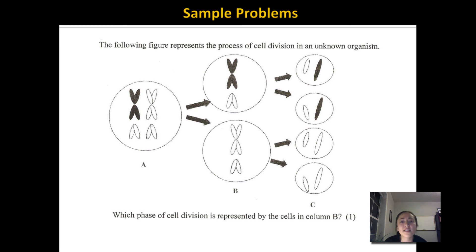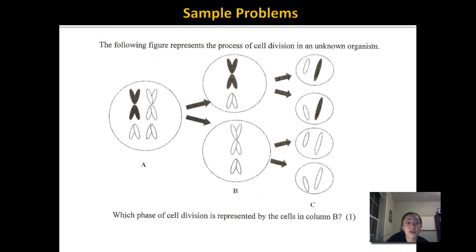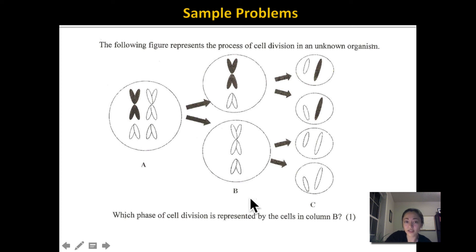The following figure represents a process of cell division in an unknown organism. In column A we can see two pairs of homologous chromosomes paired up, which tells us this is meiosis. What happens next is that the homologous chromosomes get separated into two different cells. The cells in column B have chromosomes lined up in the middle of a haploid cell, so this must be metaphase 2 — because in metaphase 2, the cells are already haploid and the chromosomes are aligned in the middle.